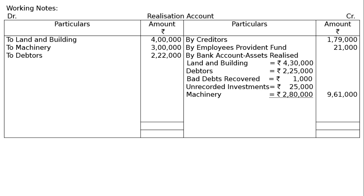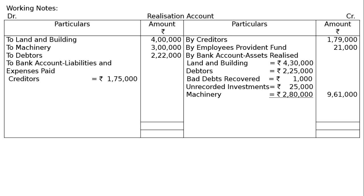Now jump to the payment side — bank account, liabilities and expenses paid. Nothing extra is mentioned about payments, so we pay both liabilities: creditors Rs. 1 lakh 75,000 (as per part E, 50% of creditors are paid Rs. 4,000 less, and the remaining creditors are paid in full — all creditors paid Rs. 4,000 less), and employees provident fund Rs. 21,000. Total is Rs. 1 lakh 96,000.